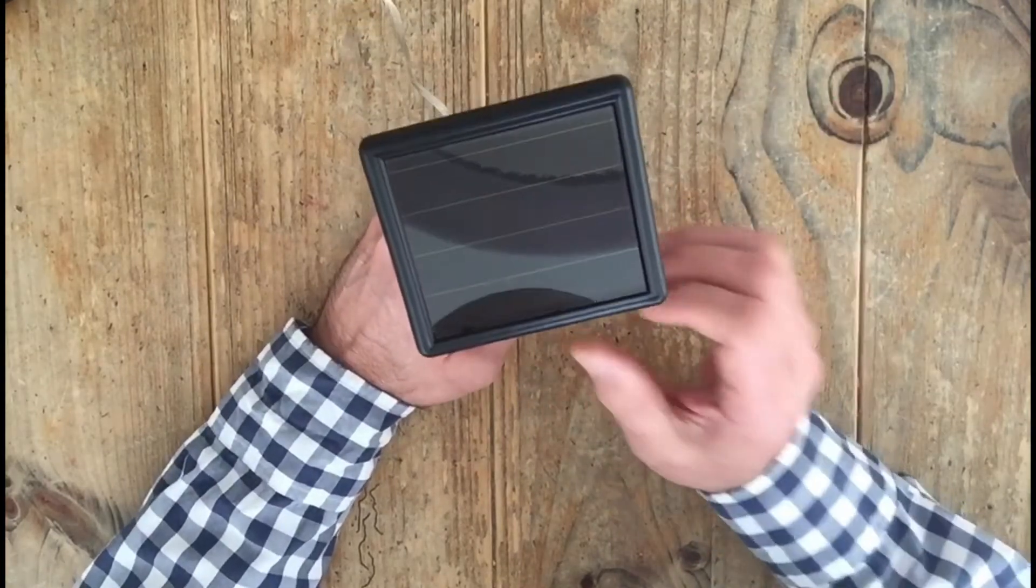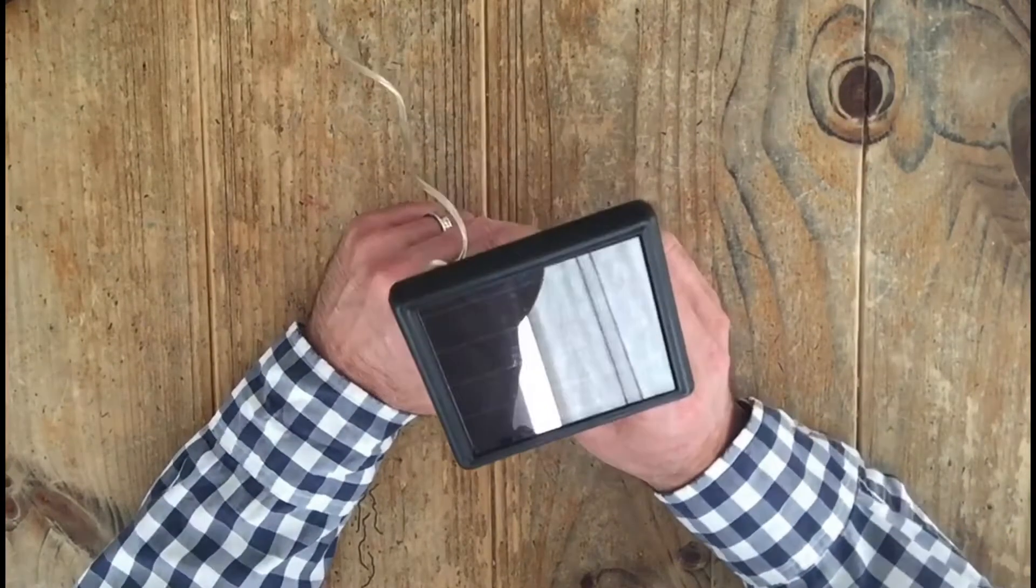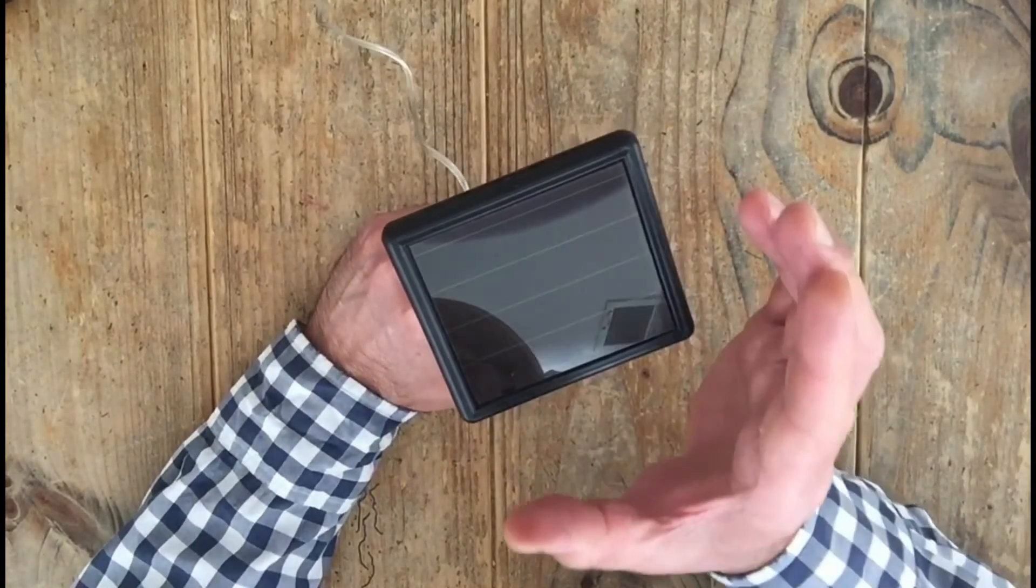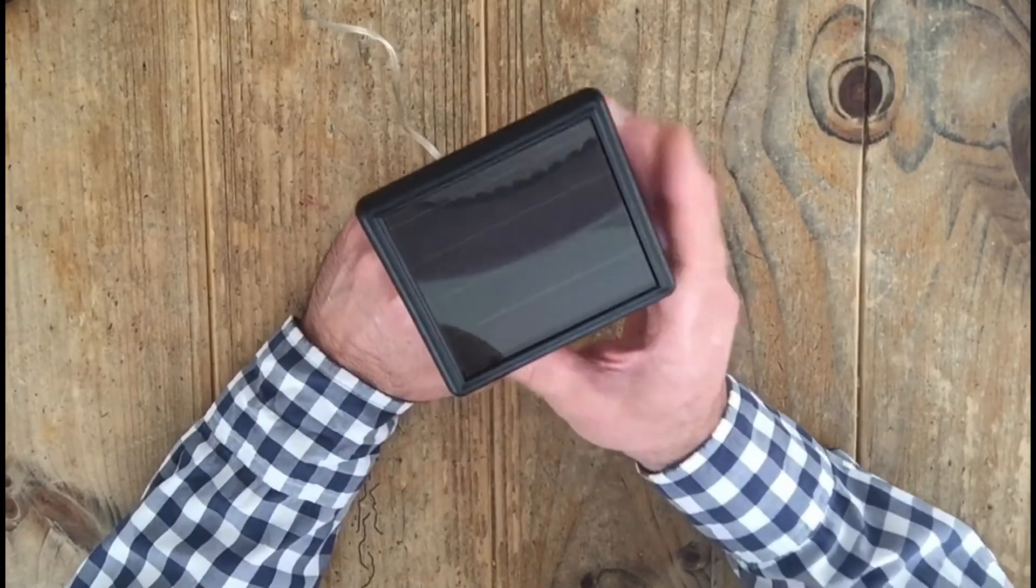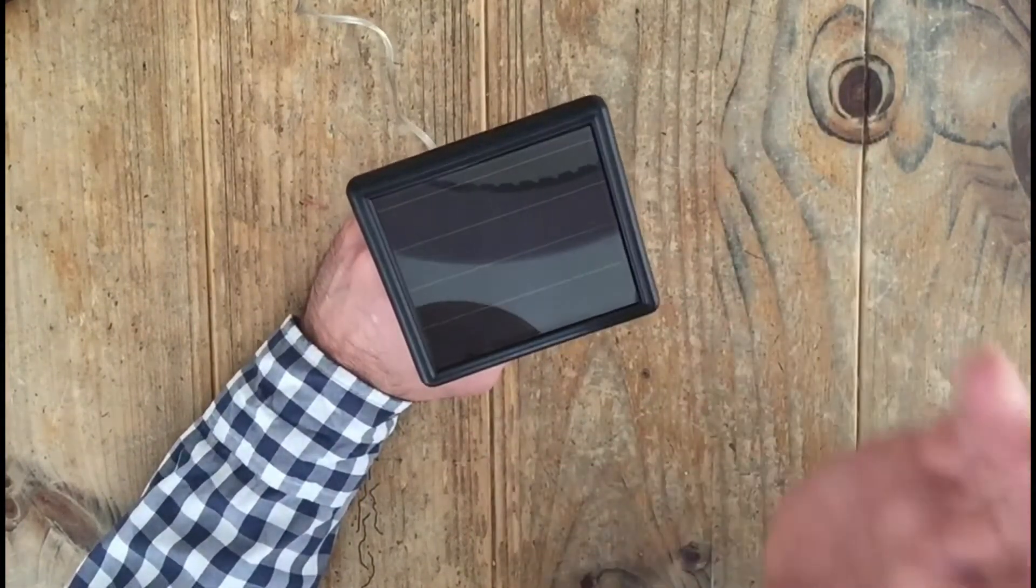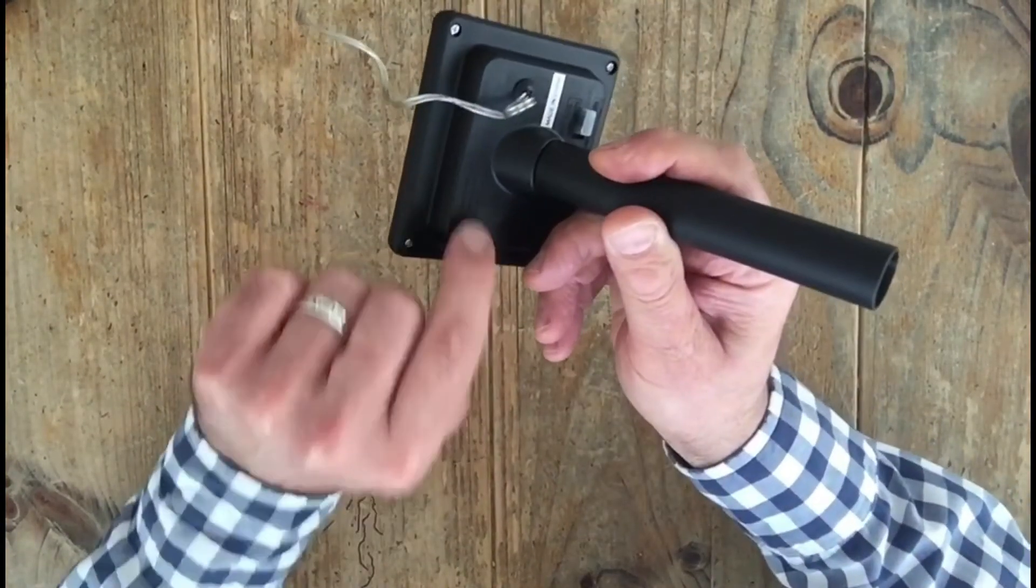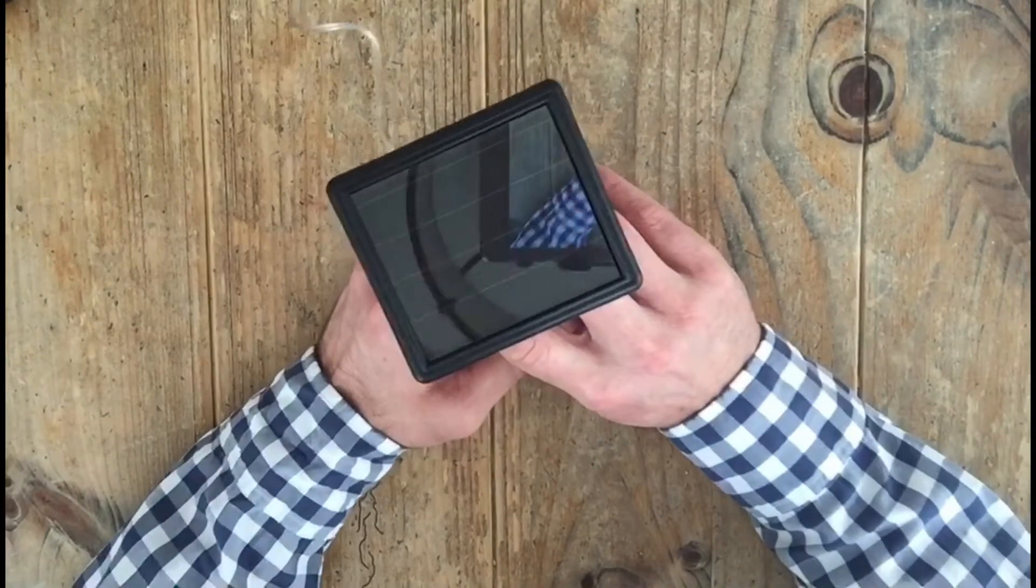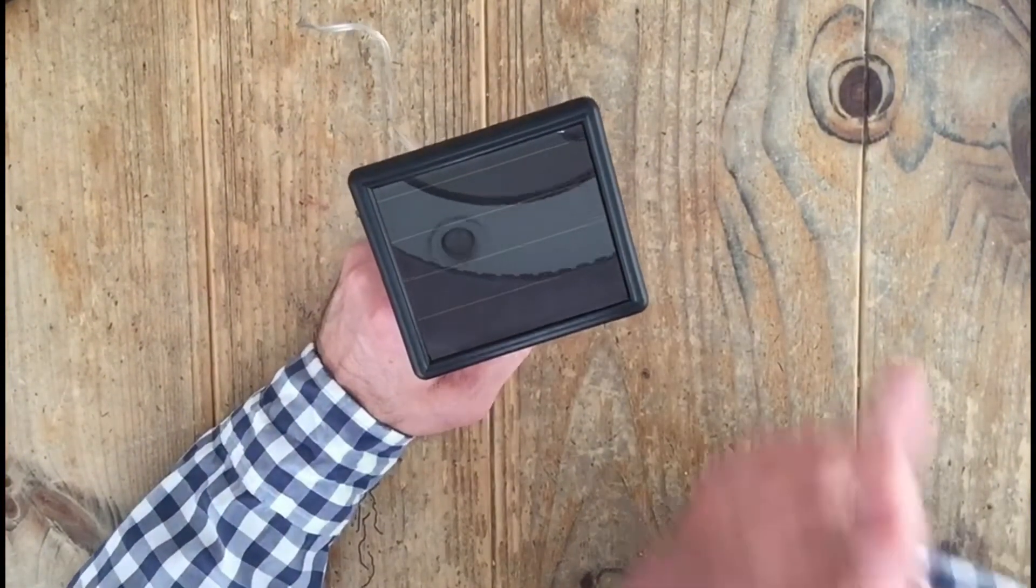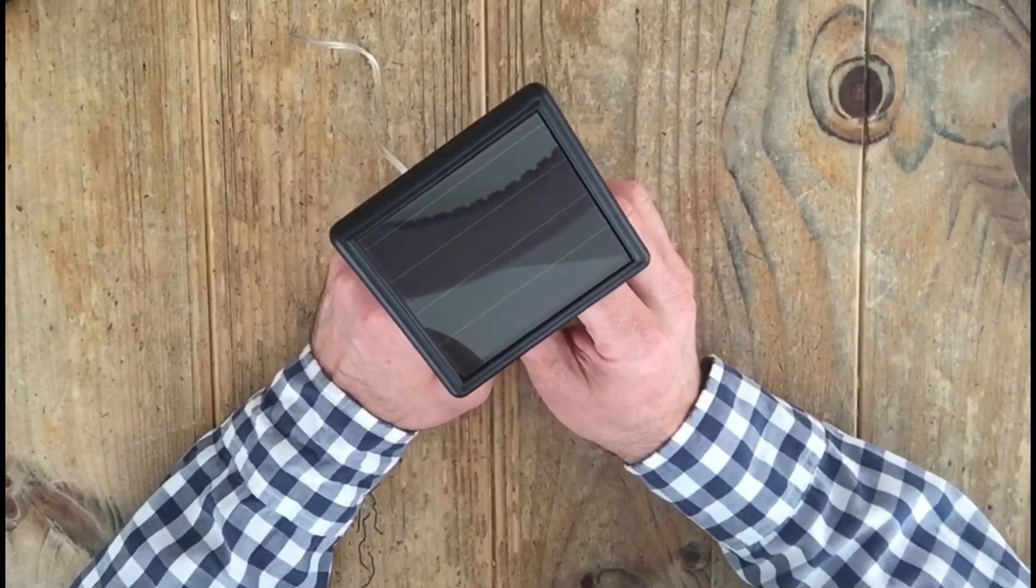A couple things you want to keep in mind when you're working with solar-powered lights. When you install this in your garden or in your yard, you want to make sure that this is in full sunlight. That allows the battery to fully charge up. If this is in shade it won't work as well. Full sunlight when you install your panel.